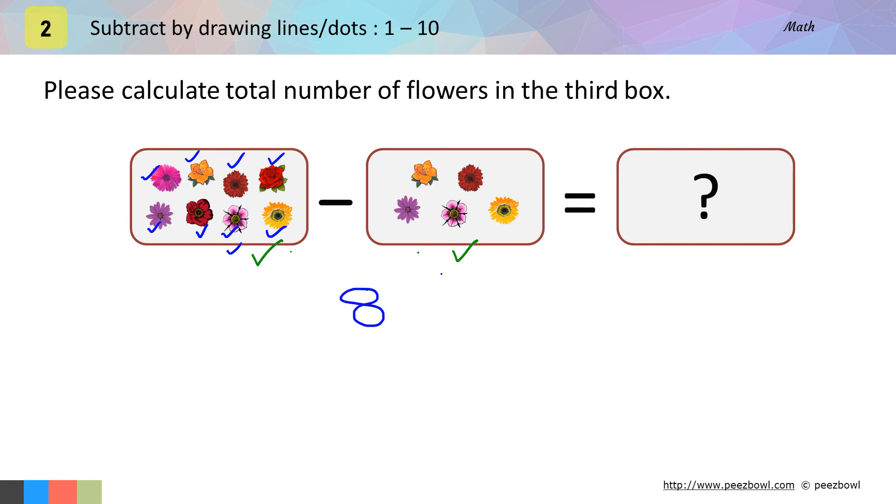Now, I will count number of flowers in the second box. In this box, we have 1, 2, 3, 4 and 5 flowers. I will write it down. As we see in the earlier question, I will write a minus sign before number 5. So, that anyone can understand that we need to subtract 5 from 8. And below 5, I will draw a horizontal line to write result of this subtraction.